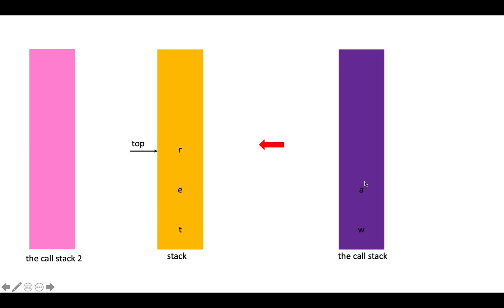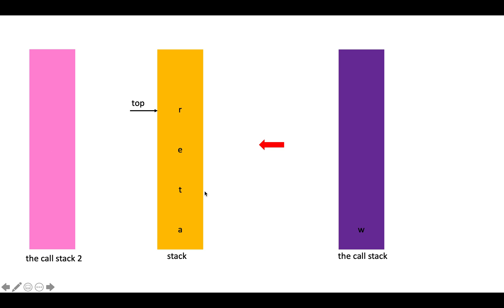Next we deal with element A. We pop R, E, and T into cross stack 2. Since the stack is empty, we put A in, then push the elements back. Finally we deal with W, inserting it at the bottom. We pop all elements into cross stack 2, then as the stack is empty we put W at the bottom and push the rest back.